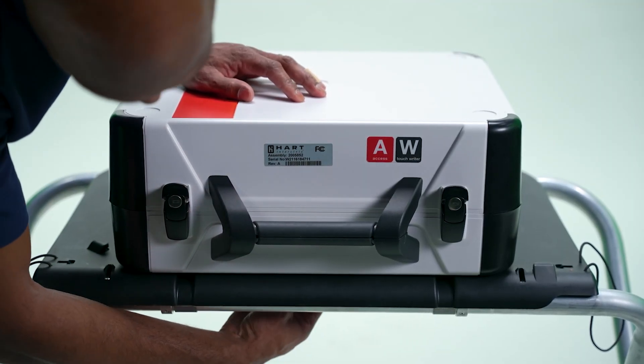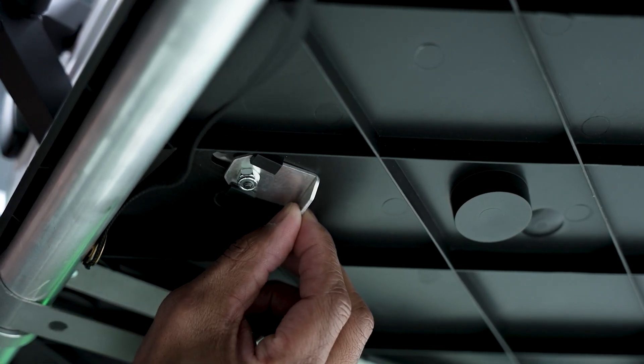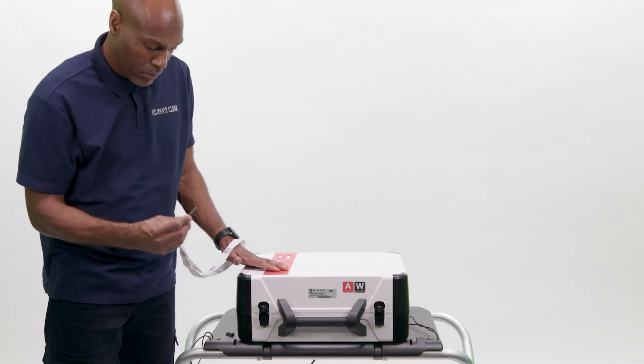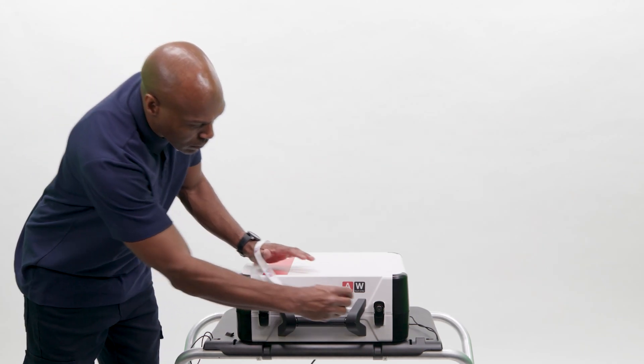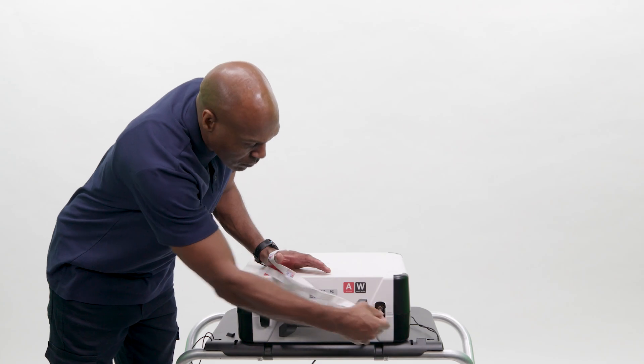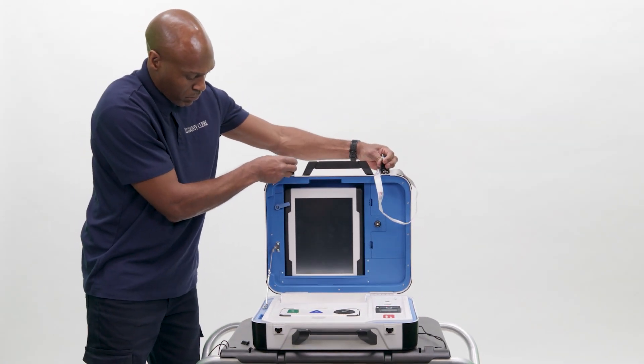Check that the touch writer is secure by making certain the latch under the stand has been pushed toward the back. Use the silver key to unlock the touch writer case latches. Open the case and lock the lid brace in place.